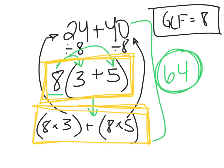You can check: 5 plus 3 is 8, and 8 times 8 is 64. Then 8 times 3 gets us back to 24, and 8 times 5 gets us back to 40; 40 plus 24 is 64. All three number sentences are equal to 64.